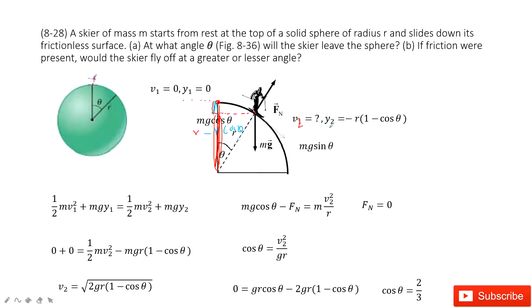And it is below the reference point. So the position for Y2 is negative R times one minus cosine theta.